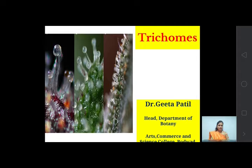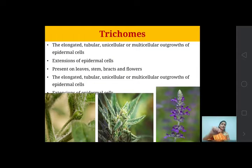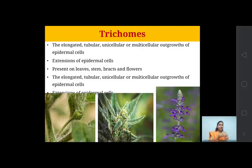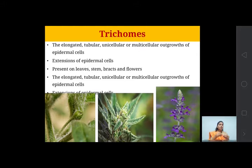What are trichomes? Trichomes are nothing but hair-like prolongations — epidermal outgrowths. They are elongated, tubular hair-like structures. They may be unicellular or multicellular. They are outgrowths or extensions of the epidermal cells, and these prolongations or projections are known as trichomes.